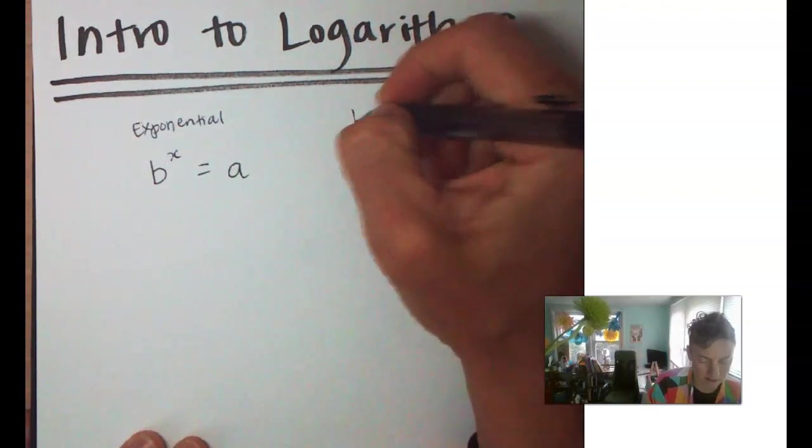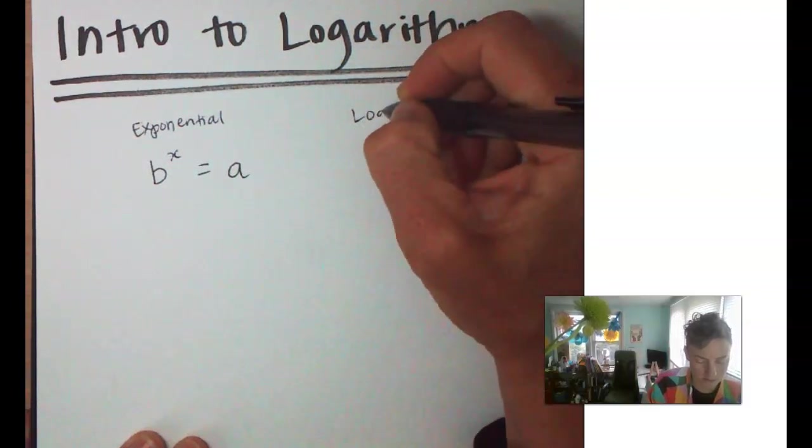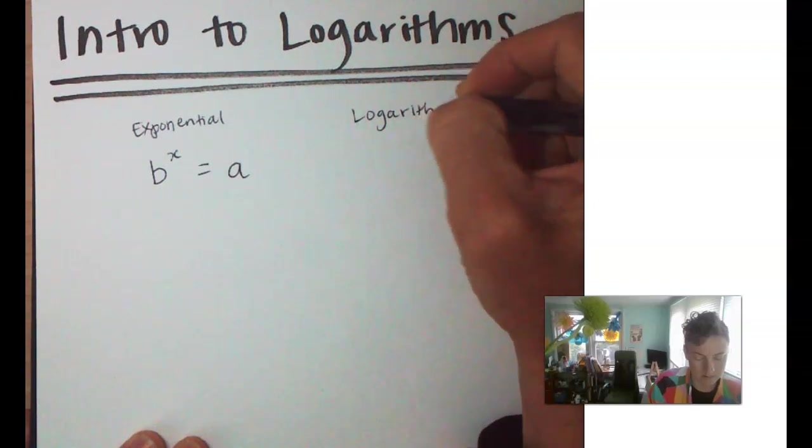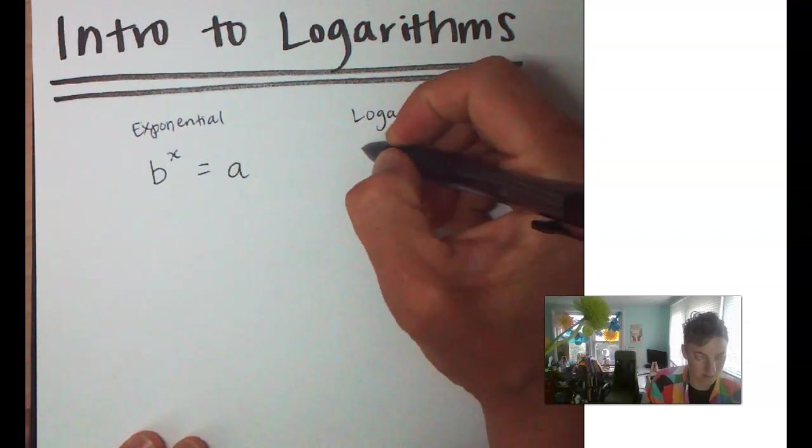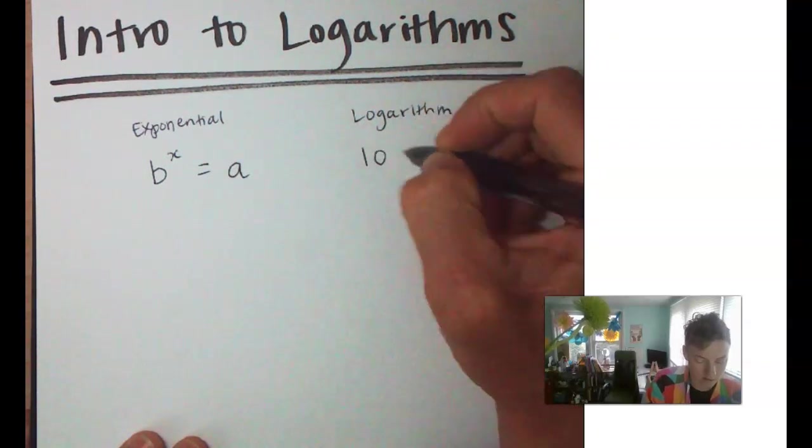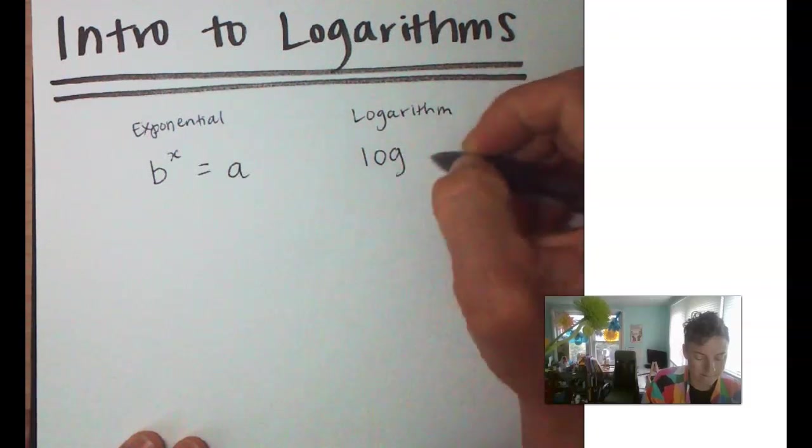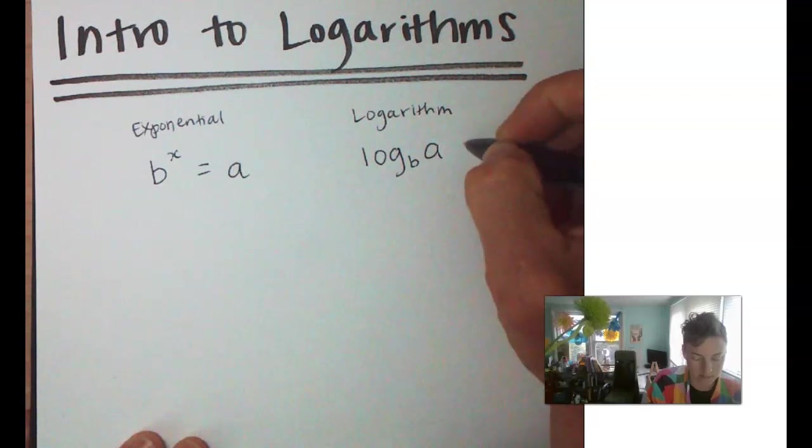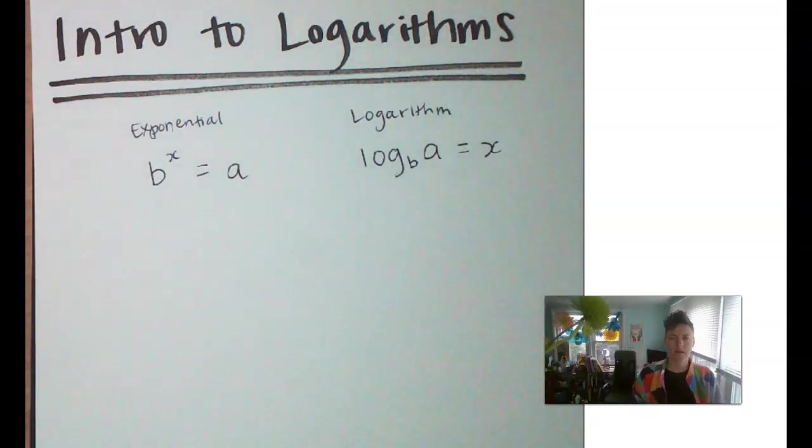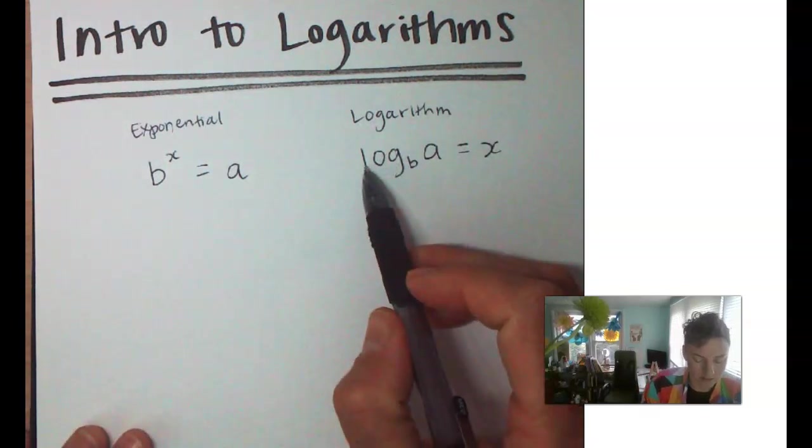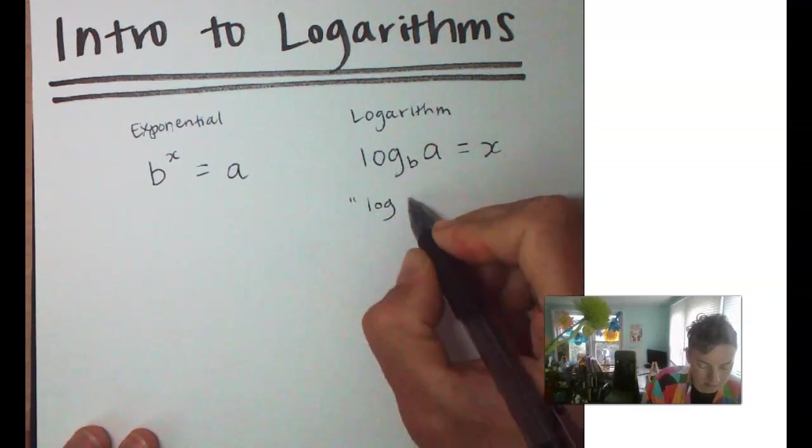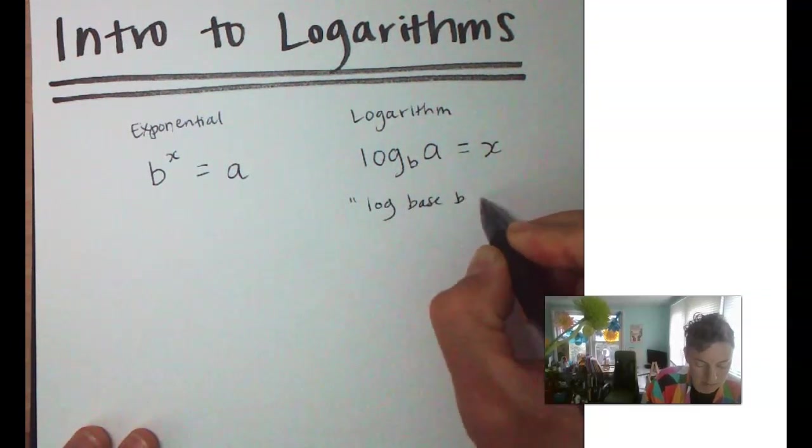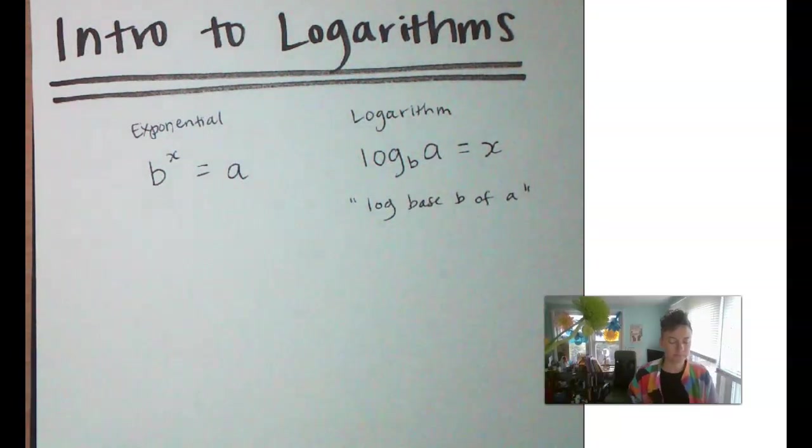And that b, its inverse function, the logarithm form, is going to be this log function, log of base, or, yeah, log base b of a is going to equal sum number x. So again, the way we read this is log base b of a equals x.